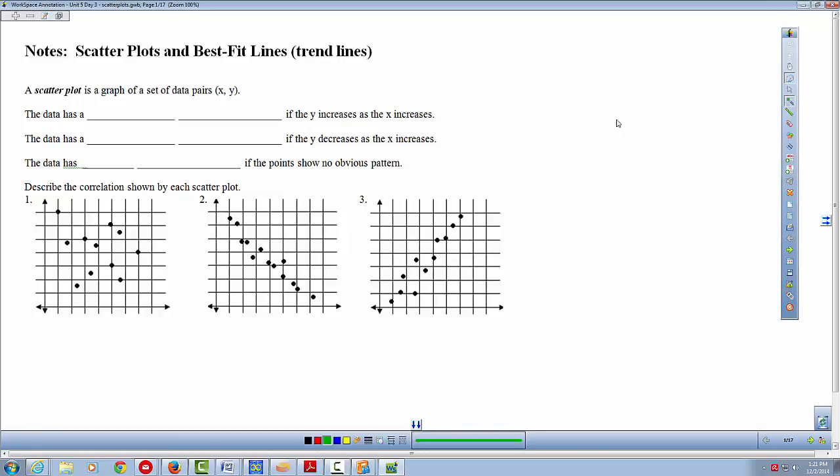Okay, so now we're going to get into scatterplots. Going back into that and trying to find our line of best fit, and we can do that with a calculator. First of all, let's fill in this first little part here of our notes. A scatterplot is a graph of a set of data pairs. It's just relating two things, so it's showing a relation between two things.